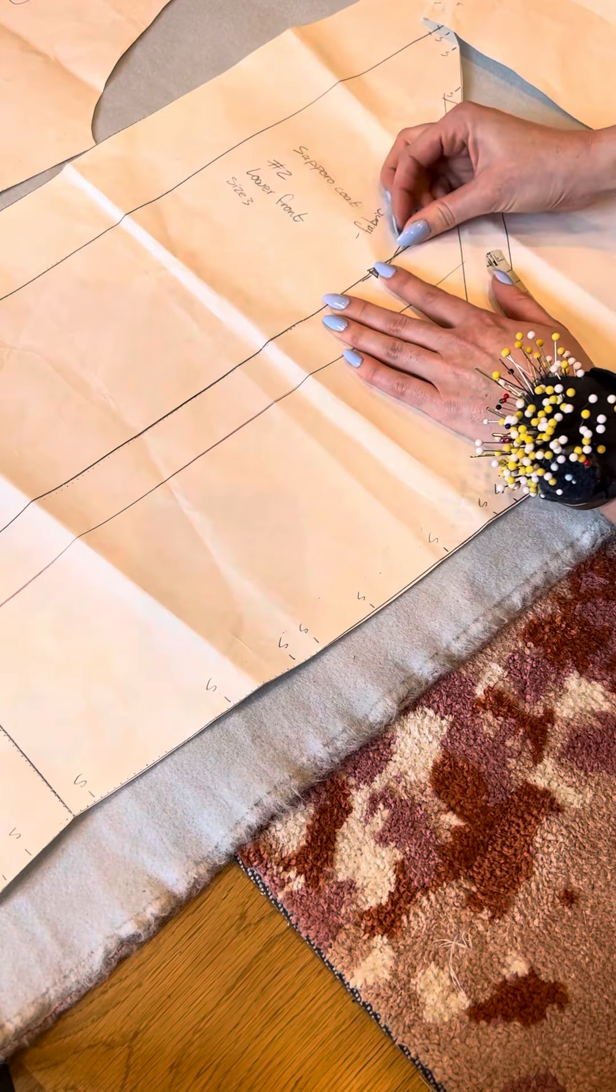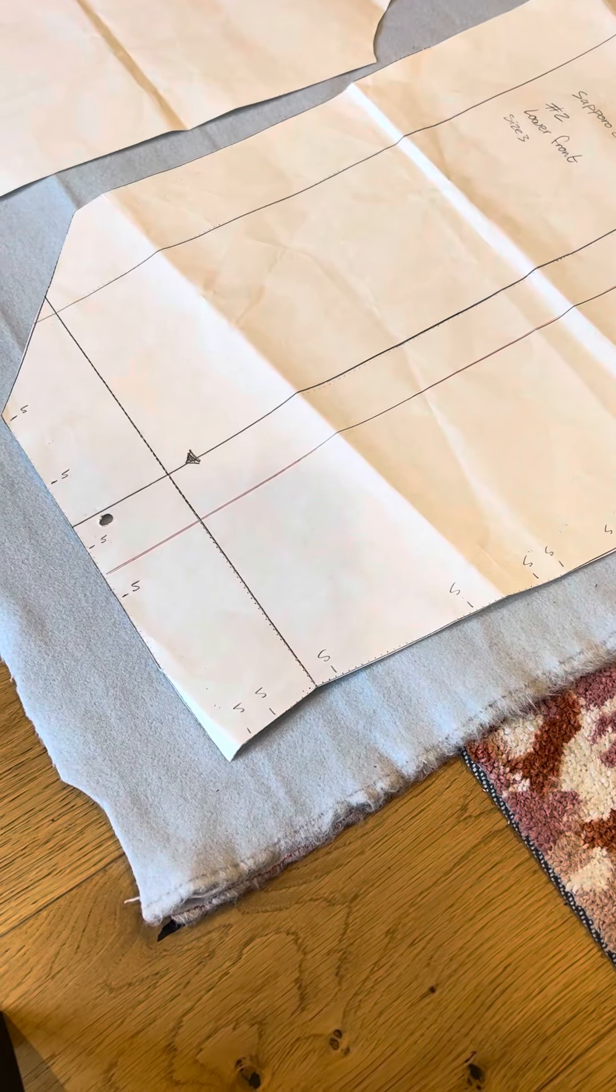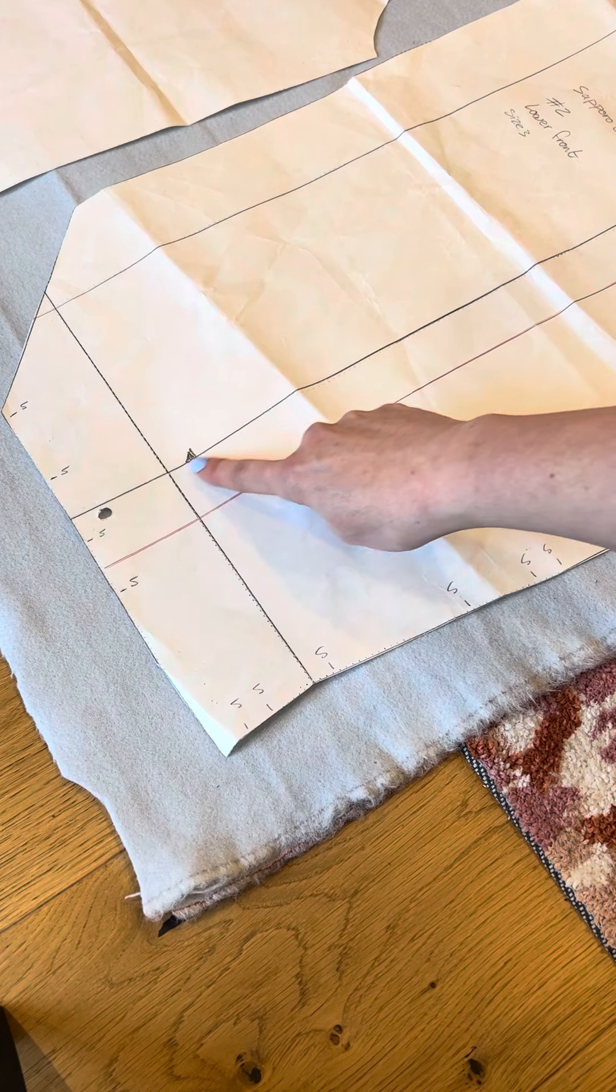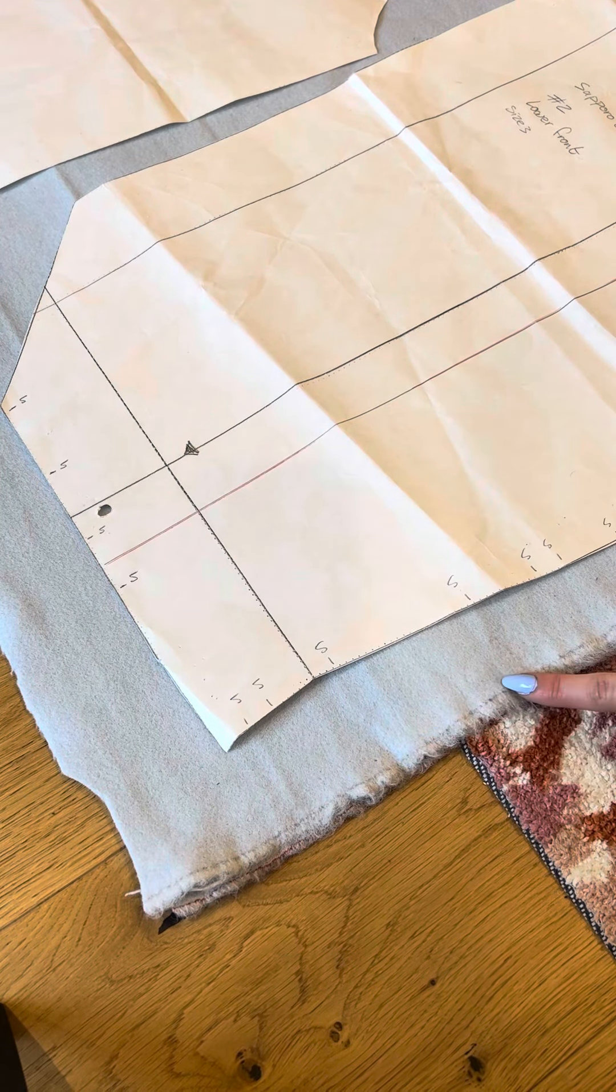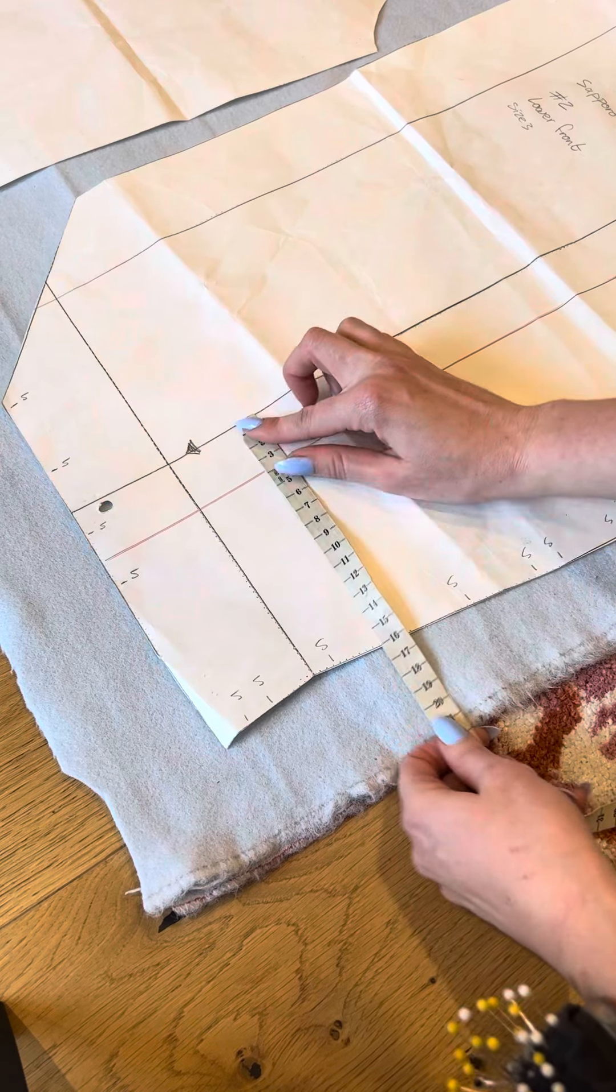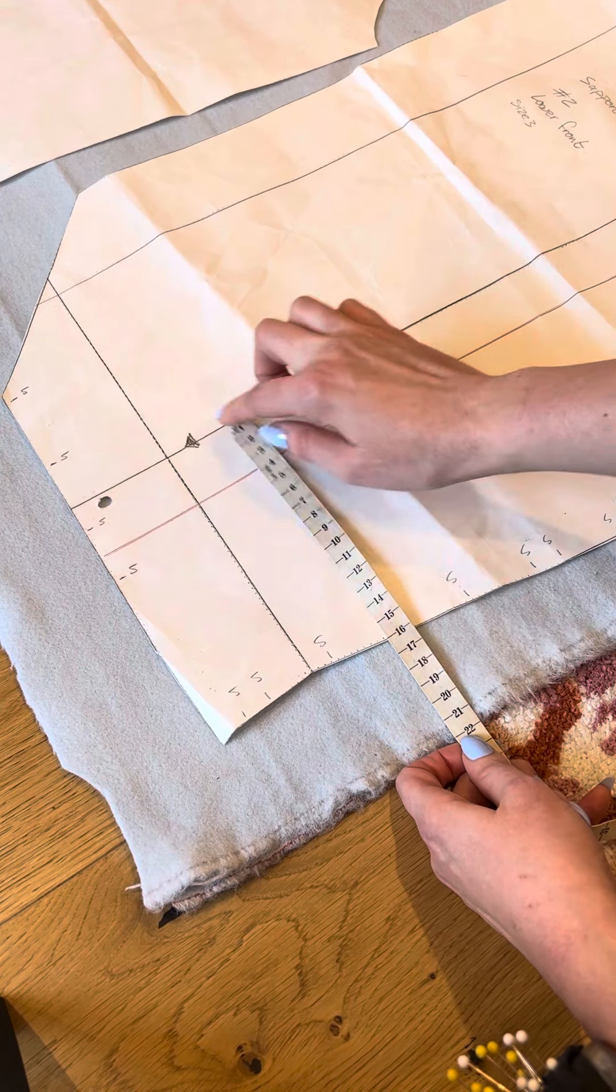I'll loosely pin my fabric and pattern piece together, then go to the end of my pattern piece. Now we want this line here, the grain line, to be 23 centimeters from our selvage. I'll put that there and do the exact same thing. You can see there that it's 22, so this line is off by one centimeter.